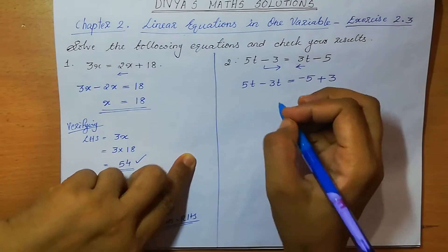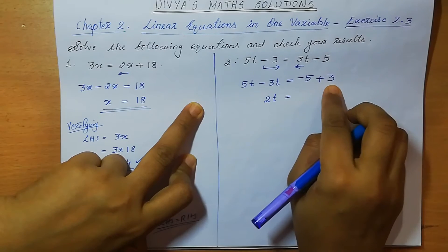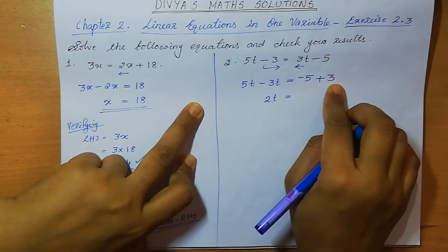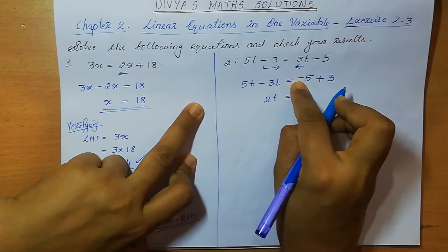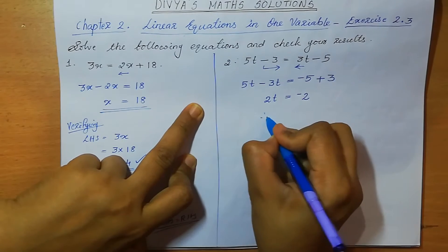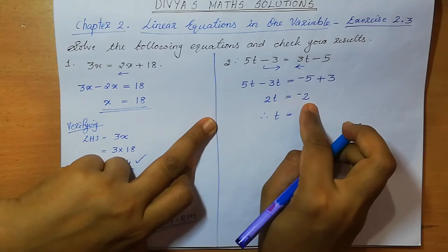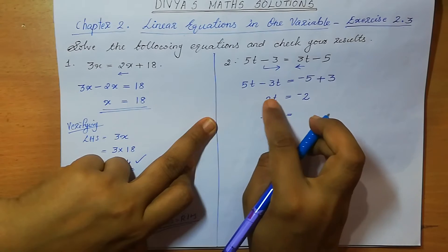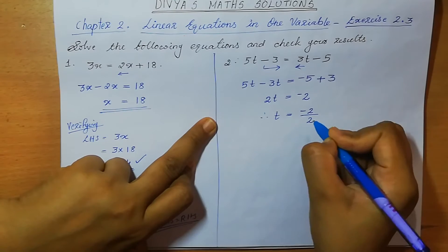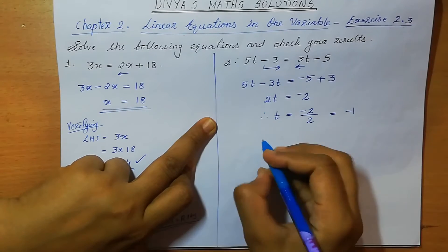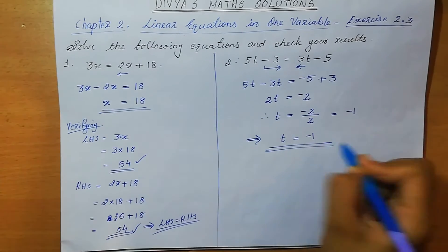5t minus 3t is 2t. So 2t = minus 5 plus 3. One is minus, another is plus, so we subtract: 5 minus 3 is 2, and we give the bigger number's symbol — 5 is minus, so 2t = minus 2. Shifting 2 means multiplication becomes division: t = minus 2 ÷ 2 = minus 1. We got t = minus 1.